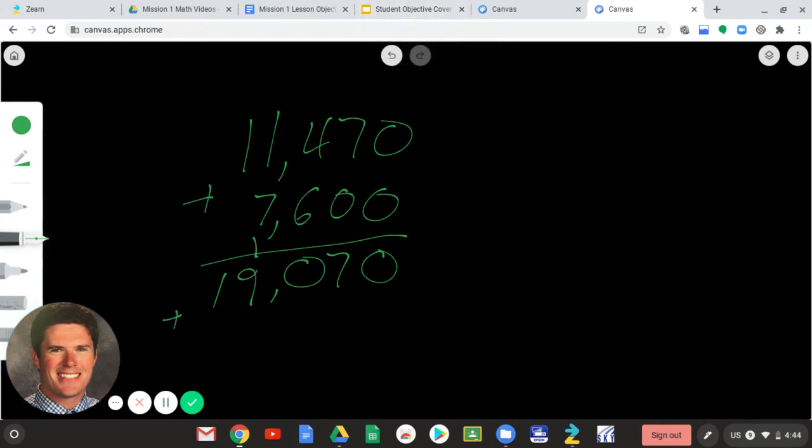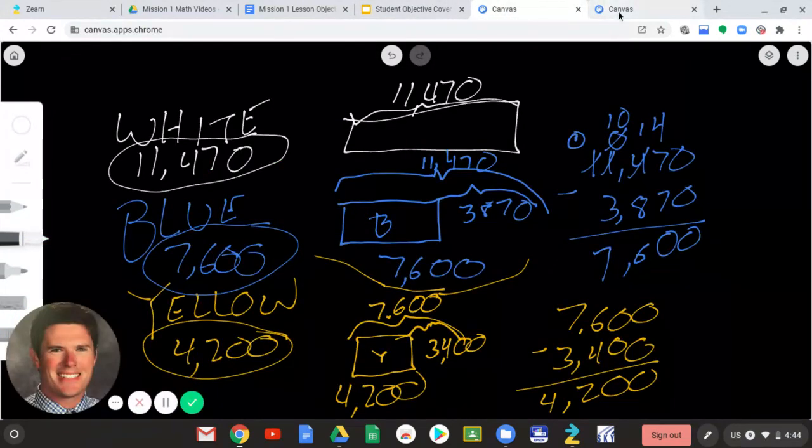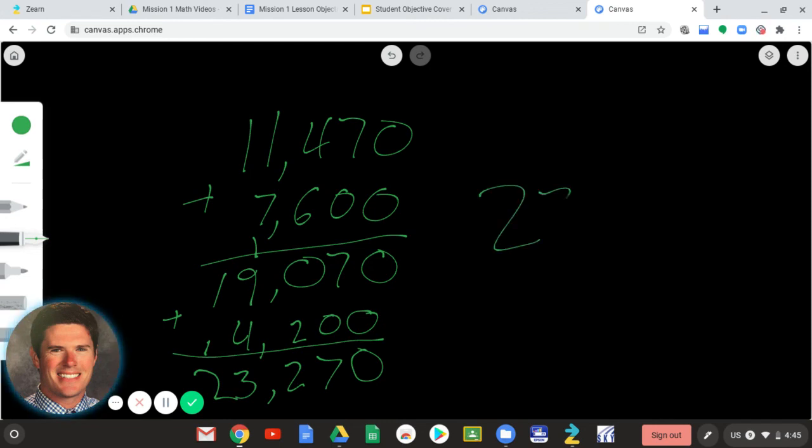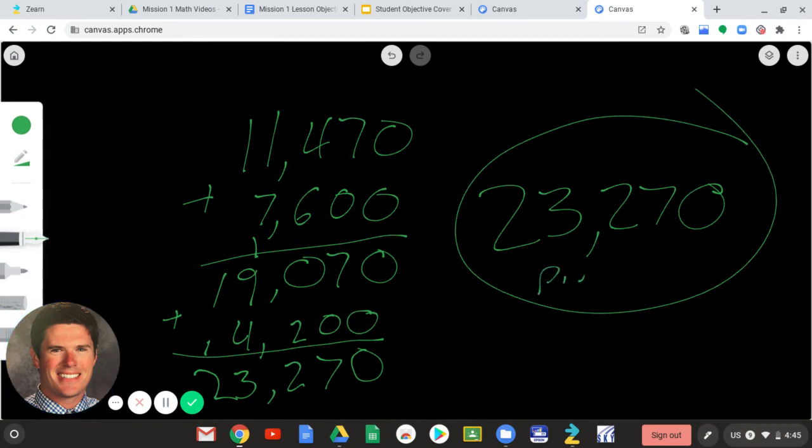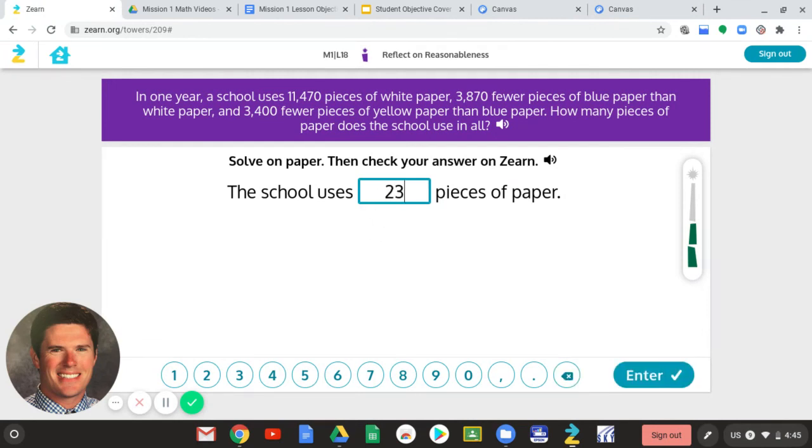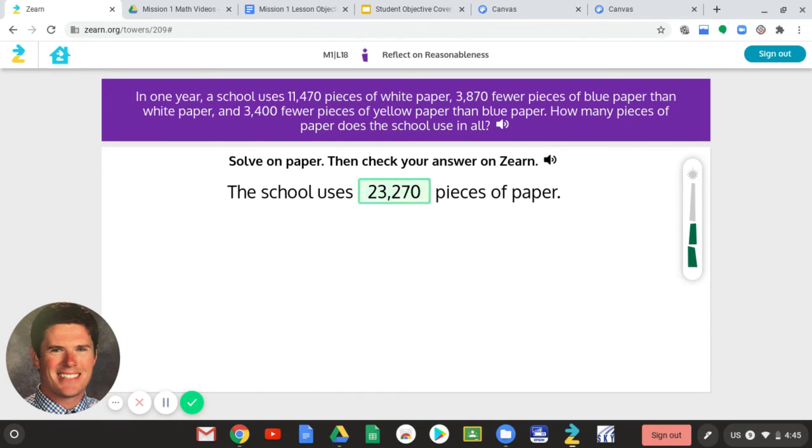And now, I have to take that, and I still have to add on whatever the yellow was. And we said that was 4,200. I'm going to add that. So, 0 plus 0 is 0, 7 plus 0 is 7, 0 plus 2 is 2, 9 plus 4 is 13. I've got to carry the 1. And 1 plus 1 is 2. So, 23,270 pieces of paper should be my answer. So, 23,270. Yes.